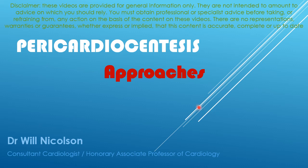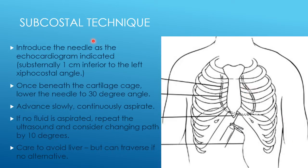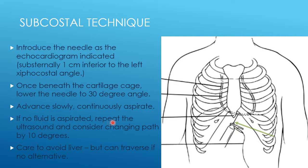We will consider the different approaches for pericardiocentesis. The most commonly used approach is the subcostal technique, and in an emergency this would be the method of choice. However, typically you would have made the diagnosis with an echocardiogram and therefore have some knowledge of the anatomy. This method should be adapted with knowledge of the location of the liver, the exact anatomy of the pericardial fluid, and where the best angle of approach and error margin for your procedure is achieved.